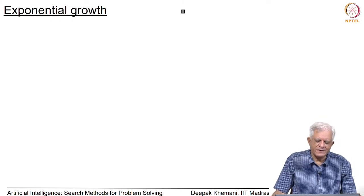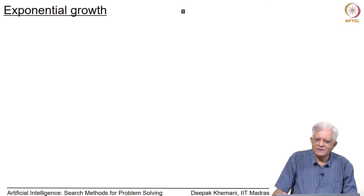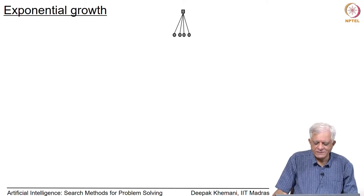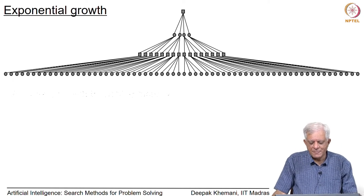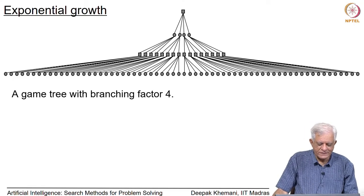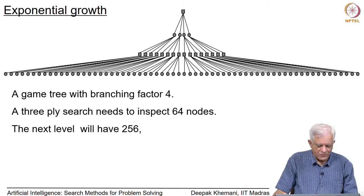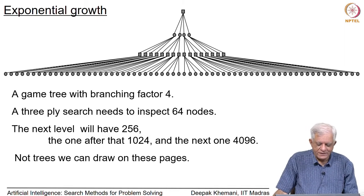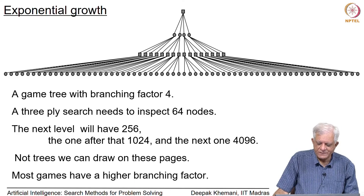The main problem is that there is exponential growth: each player has a certain number of choices, and at the next level the next player has that many choices for each move made by the first player, so the game tree grows exponentially. Supposing there was a simple game in which each player had four choices — a branching factor of four — then a three-ply look-ahead search tree would inspect 64 nodes, then 256, then 1024, then 4096. These are trees we cannot analyze if they are long games, and most games have higher branching factors.